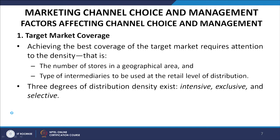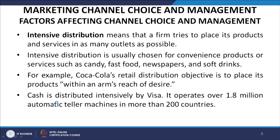The first question is target market coverage. Achieving the best coverage requires attention to the density — the number of stores in a geographical area — and the type of intermediaries at the retailer level. Three degrees of distribution density exist: intensive, exclusive, and selective. Intensive distribution means a firm tries to place its products and services in as many outlets as possible. It is usually chosen for convenience products such as candies, fast food, newspapers, and soft drinks.